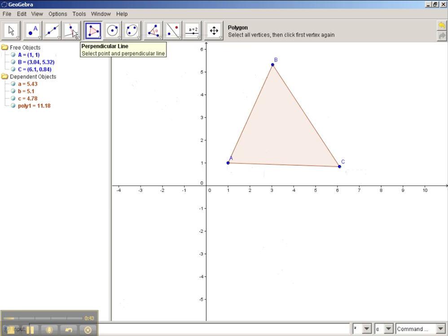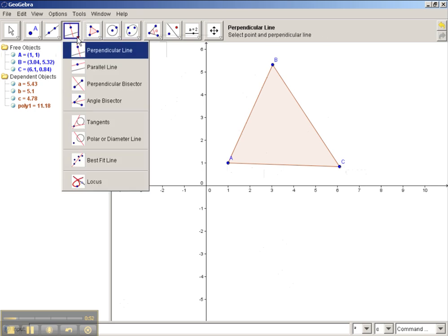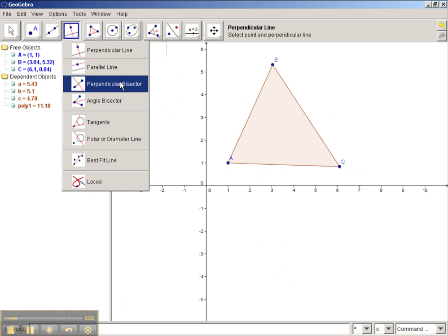To do that, you're going to click on where you see the perpendicular line tool. You see there's a little red arrow on the bottom right corner of that tool. You're going to click that and it's going to give you all these options. So of course we want the perpendicular bisector, so go ahead and select that.